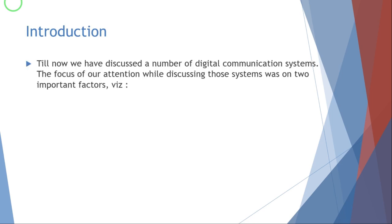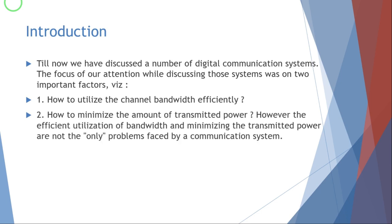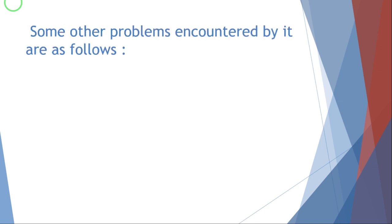Till now we have discussed a number of digital communication systems, and the focus of our attention while discussing those systems was on two important factors: how to utilize the channel bandwidth efficiently, and how to minimize the amount of transmitted power. However, efficient utilization of bandwidth and minimizing the transmitted power are not the only problems faced by a communication system. Some other problems are also encountered.